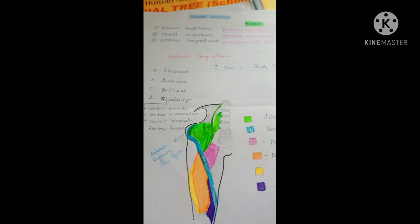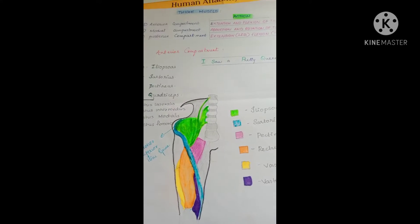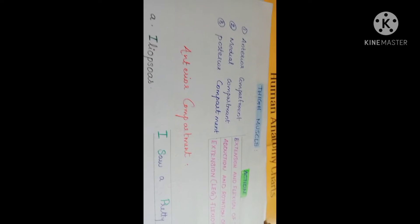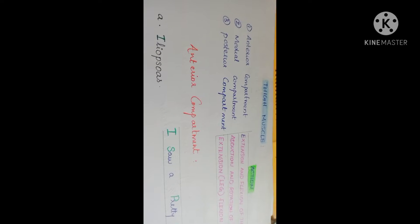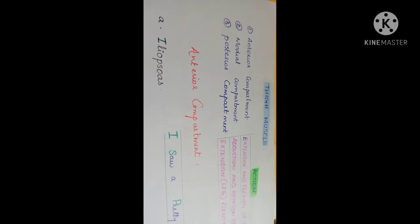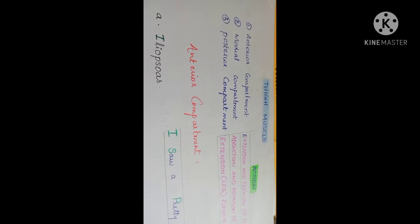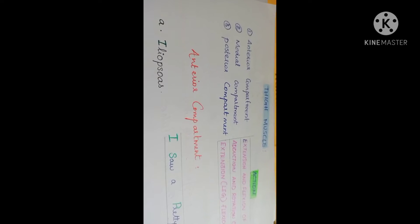Let's start with the thigh muscle. The thigh muscle has 3 compartments: Anterior Compartment, Medial Compartment, and Posterior Compartment.